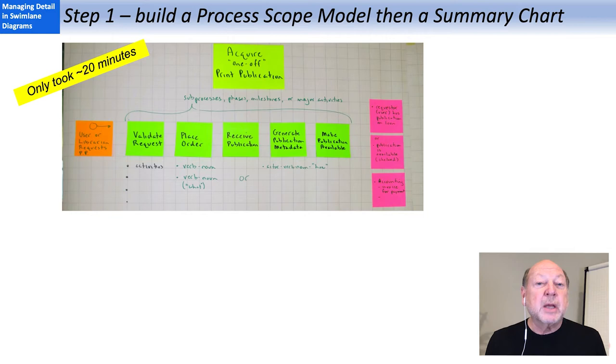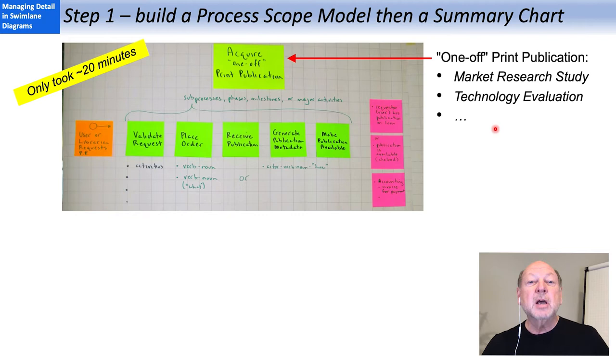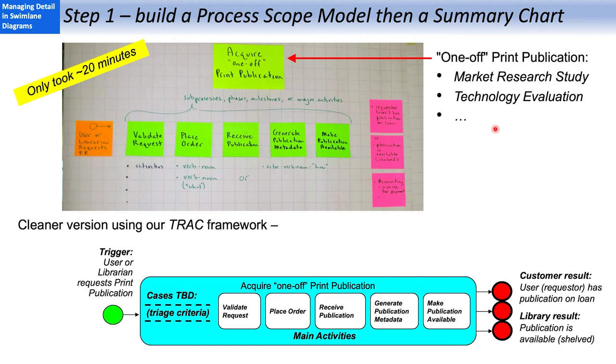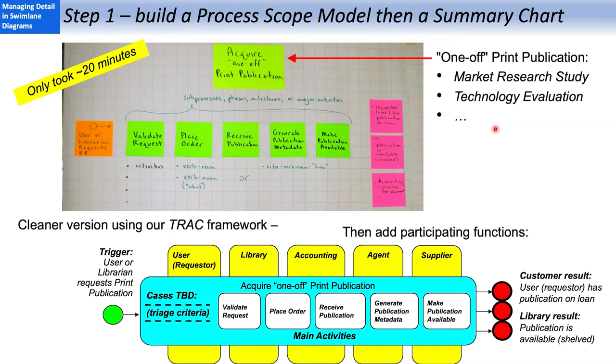I facilitated them through that, and it only took about 20 minutes. The process was to acquire a one-off print publication, such as a market research study, technology evaluation, and so on. Here's the cleaner version using our track framework. Triggers, results, main activities, cases, or variations. Right away, this was useful to the group. When we finished the redesign exercise, most of the participants said this was the most useful thing we did.